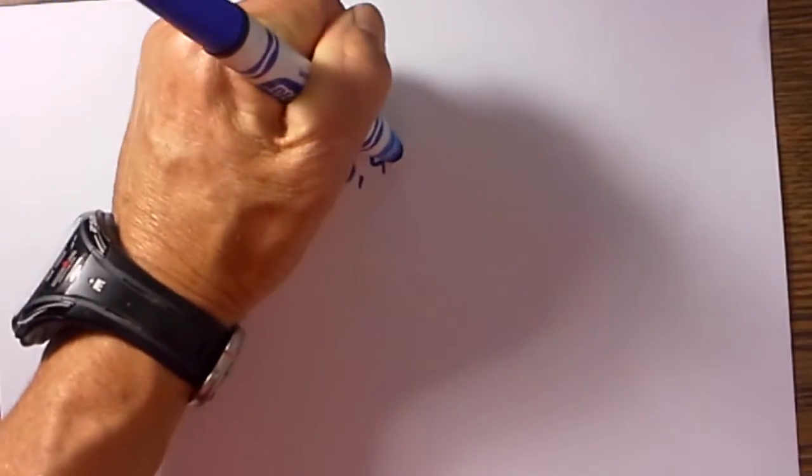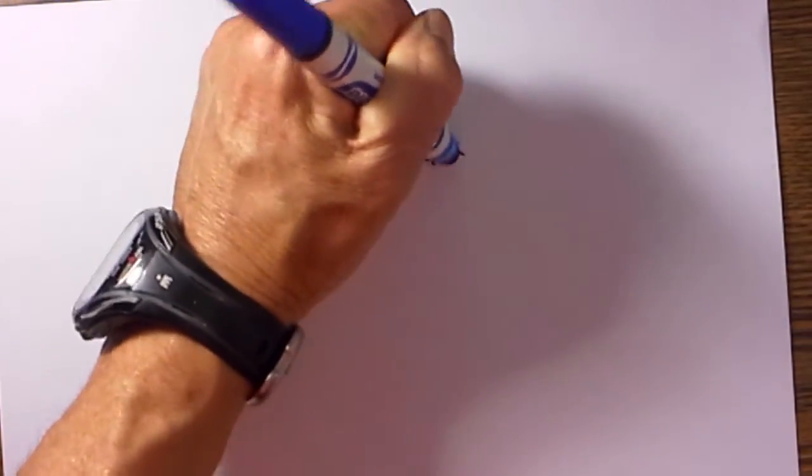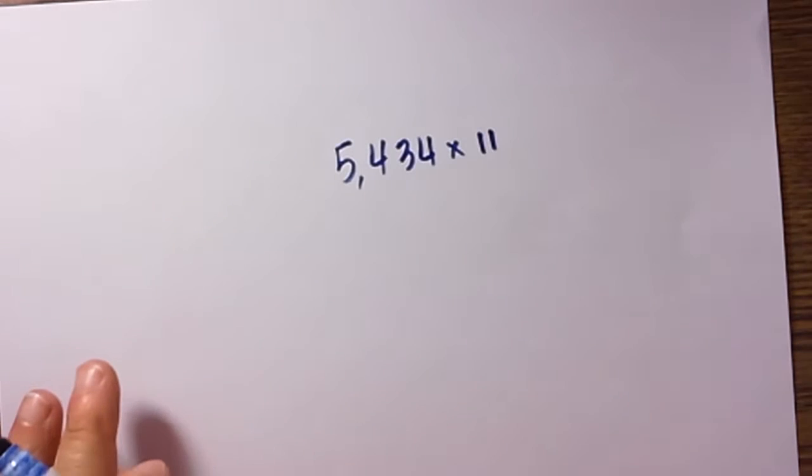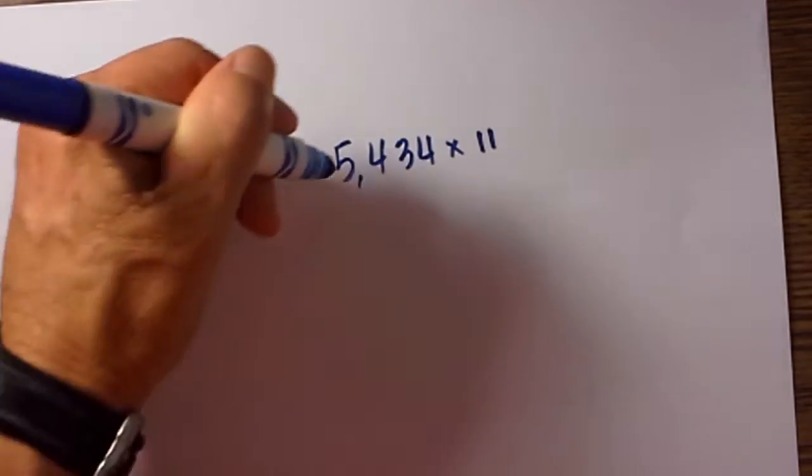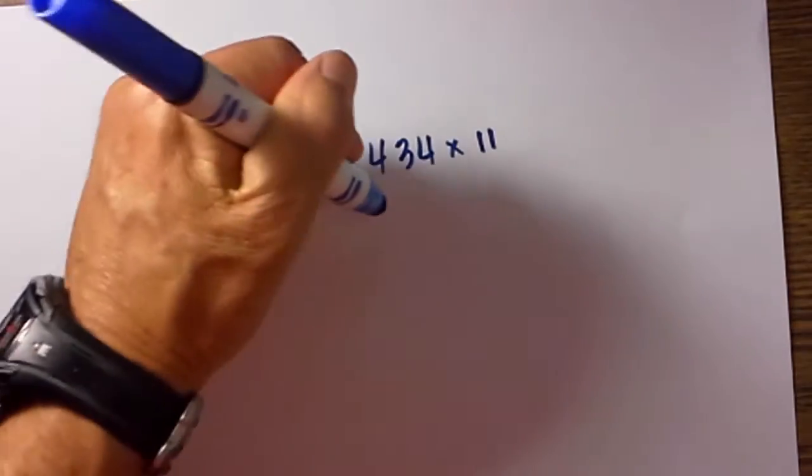But now what if you encounter a problem like this, one that is more than just two digits? Say you have 5,434 times 11. I can't do that in my head, but with this simple little trick you can. First digit is going to be the 5.